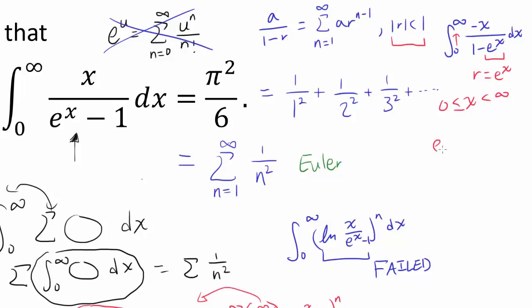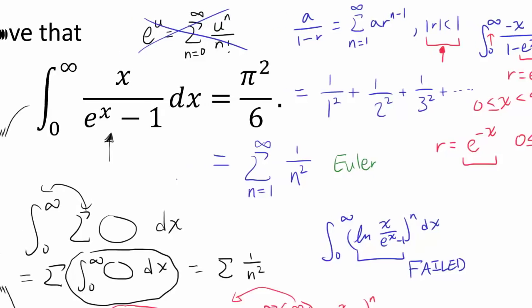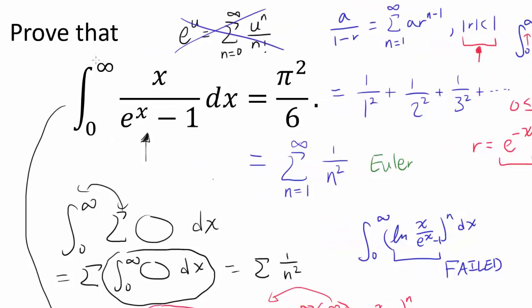But what if the common ratio is e to the negative x? When the common ratio is e to the negative x, its absolute value will be less than 1 for x between 0 and infinity. So if we can change the expression so that we have e to the negative x instead of e to the x, we can work with that. We can do so by multiplying the top and bottom of the fraction by e to the negative x, giving us 1 minus e to the negative x in the denominator.